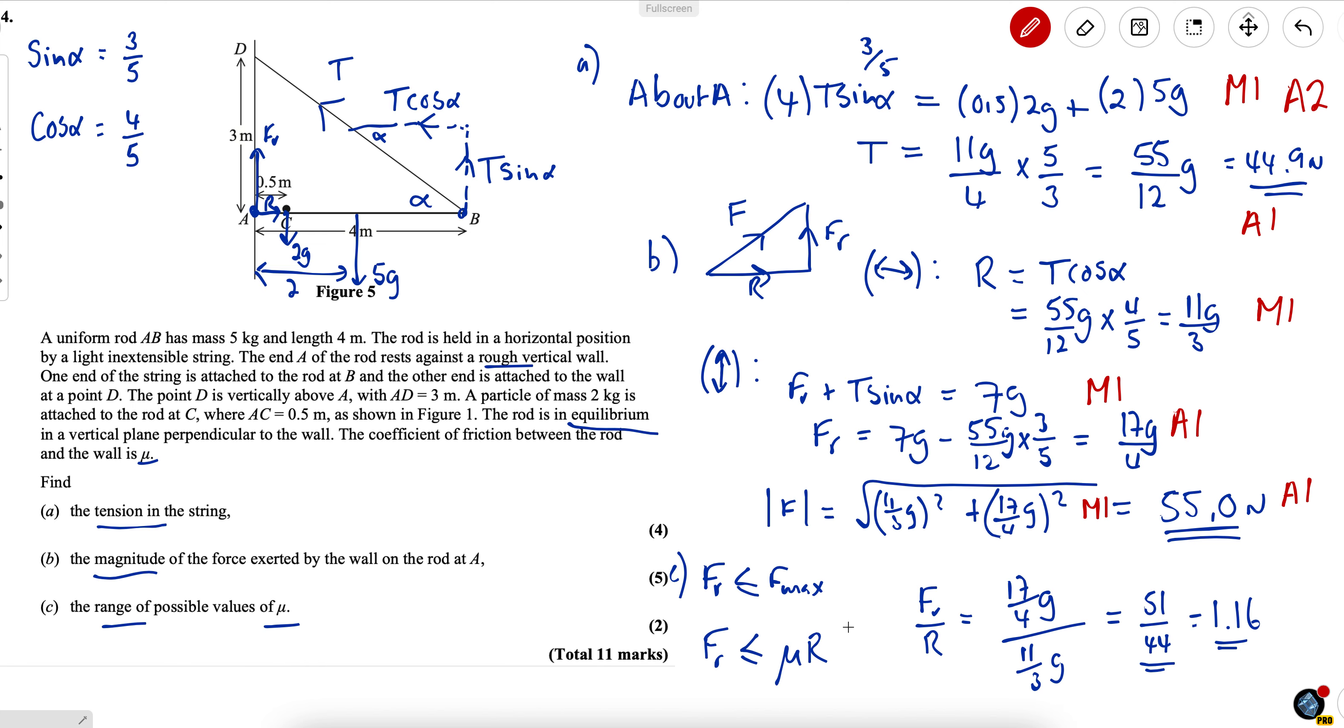And then a method mark for using that F friction must be less than or equal to mu R. Now it's important here it can't be equal to and it can't be less than otherwise you'll lose that mark and then an accuracy mark for either this value or this value.